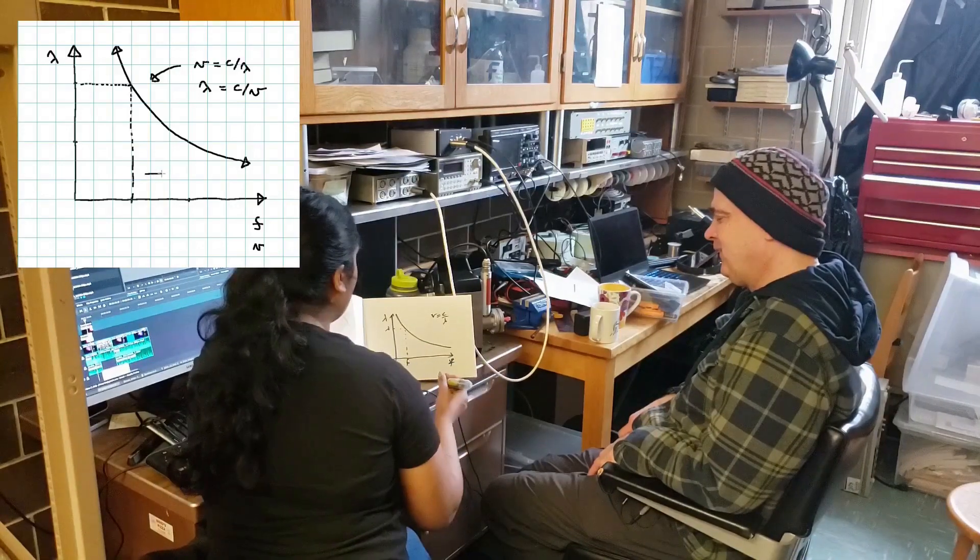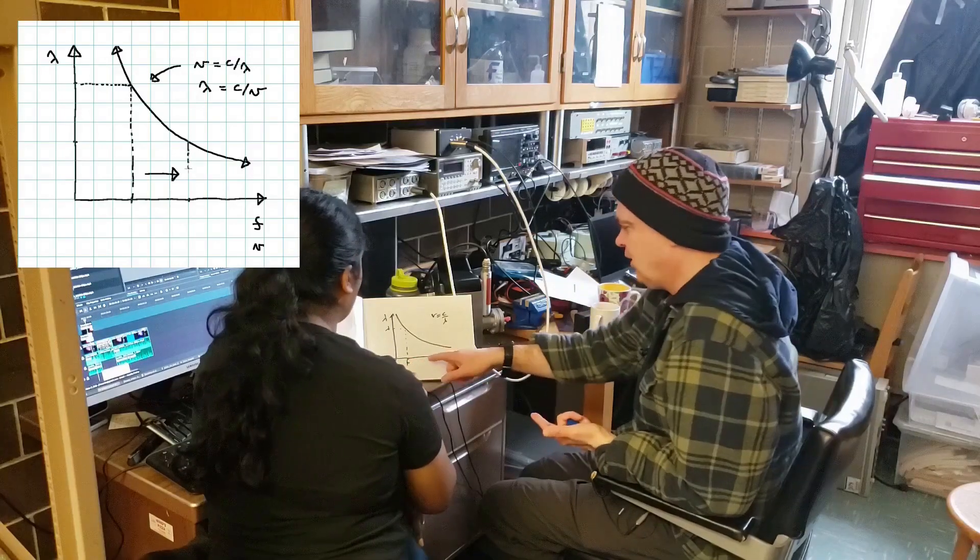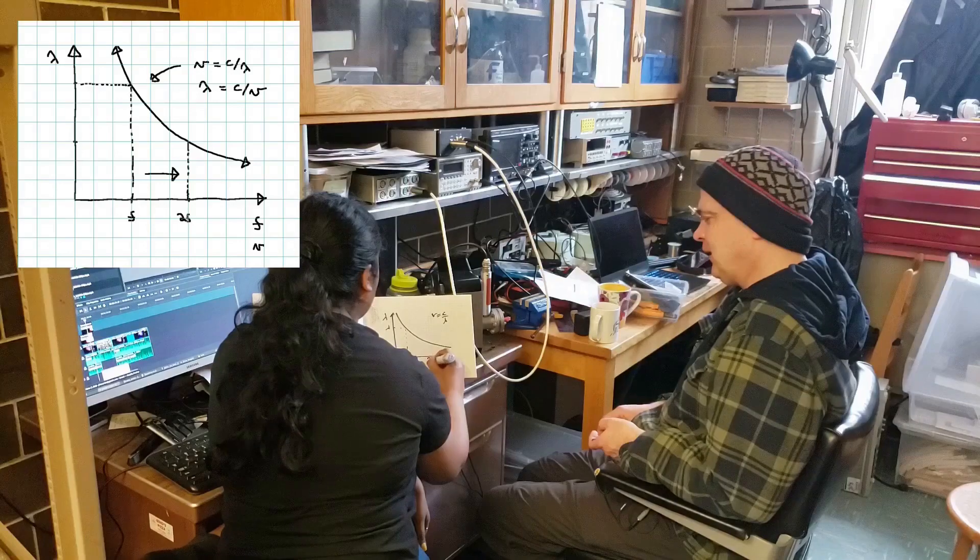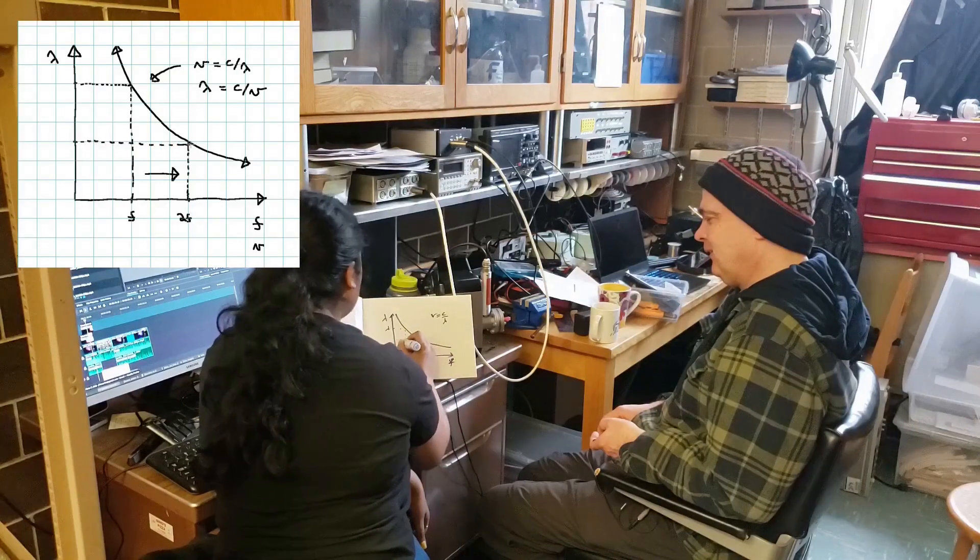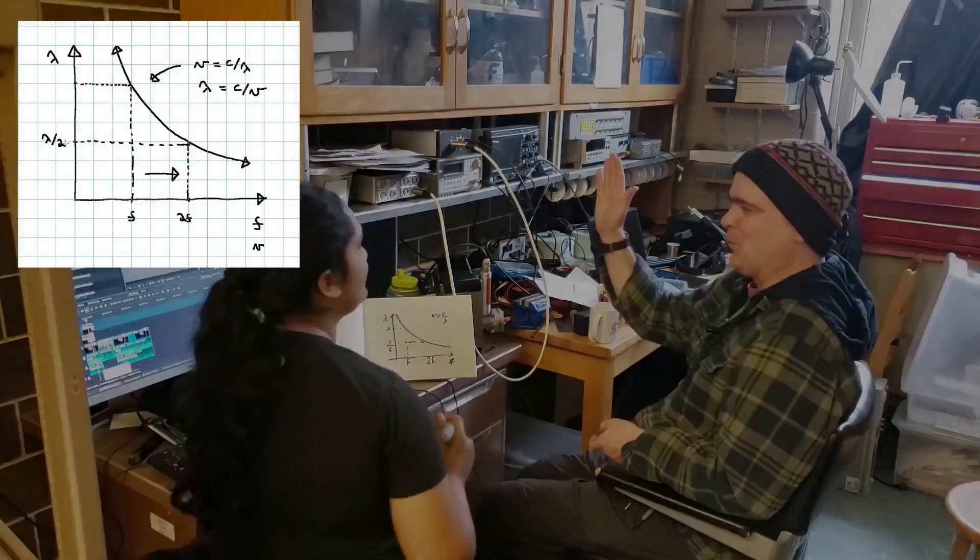Well, what would happen if you, so what are we doing? We're like saying, okay, if I double the frequency. Right. Yes, let's double the frequency. Yeah. Yeah. And then look at what happens. It corresponds with half the wavelength. Cool.